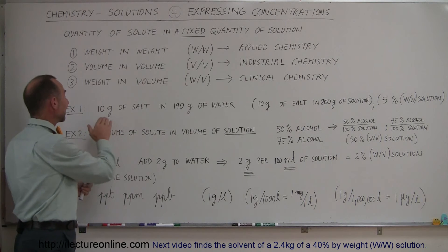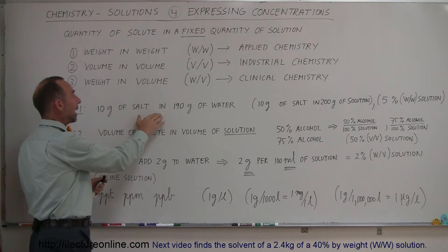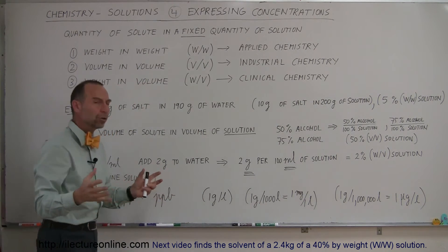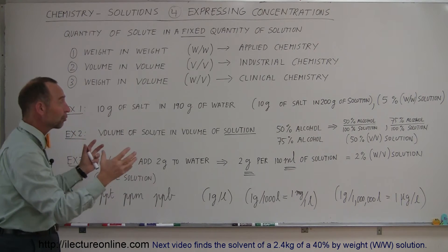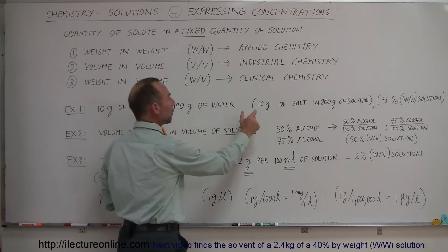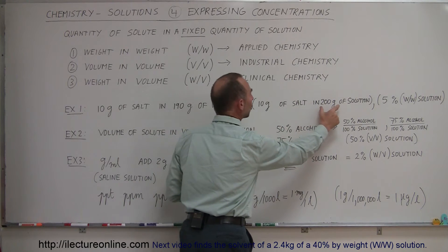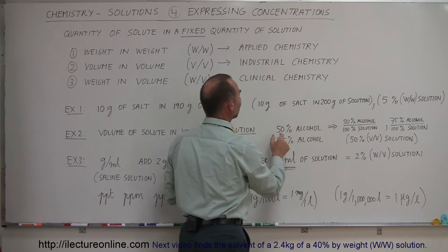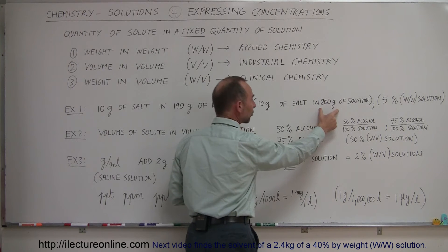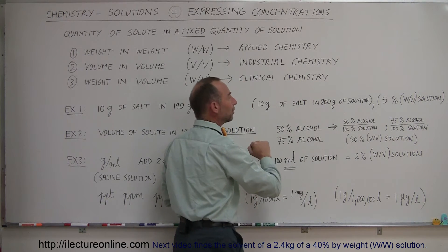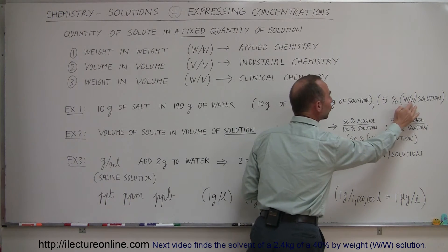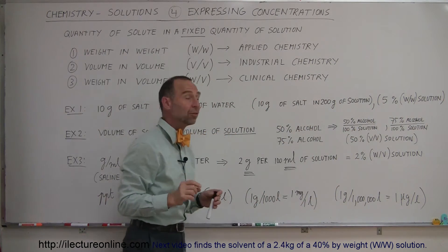Let's say we take 10 grams of salt and we add it to 190 grams of water. When we add the two together, we'll have 200 grams of solution. What we talk about then is how many grams of salt we have in the total grams of solution. If we divide 10 grams by 200 grams and multiply by 100, we end up with a 5% weight-to-weight solution.